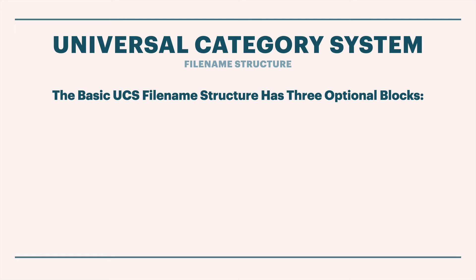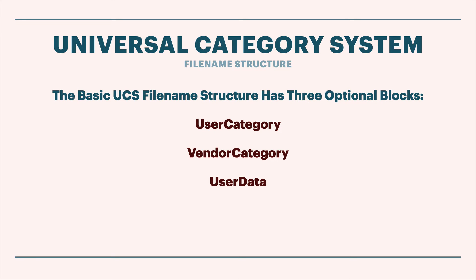The file name structure also has three optional blocks that can be applied and used. They're totally optional - not required like the four basic blocks, but quite useful in certain situations. The first is that it's possible to define an additional user category within the file name. It's also possible to define a vendor category in the file name, which would be quite useful for vendors delivering a library who want some way of organizing internally. Finally, there needs to be some space in the file name to supply other information - so we have a place simply called user data, where you can store basically anything else in the file name that you choose to store there.